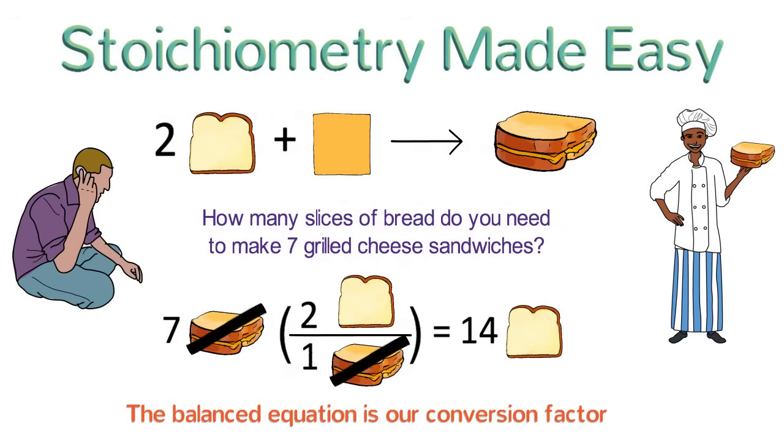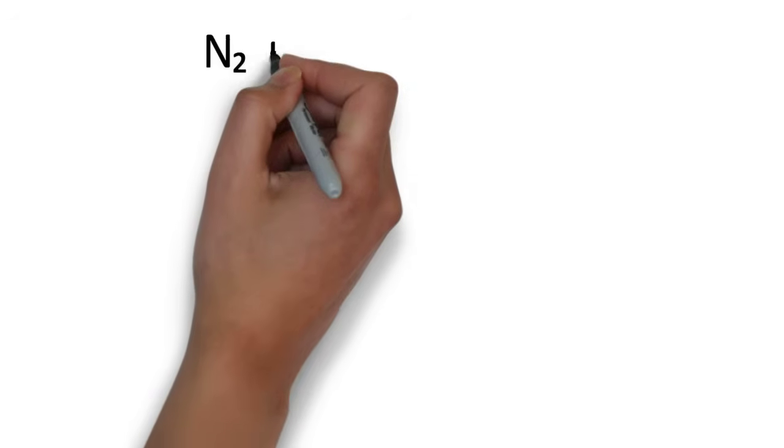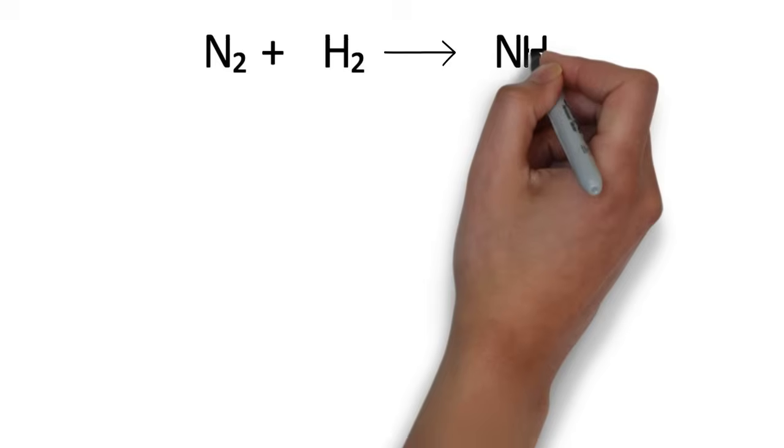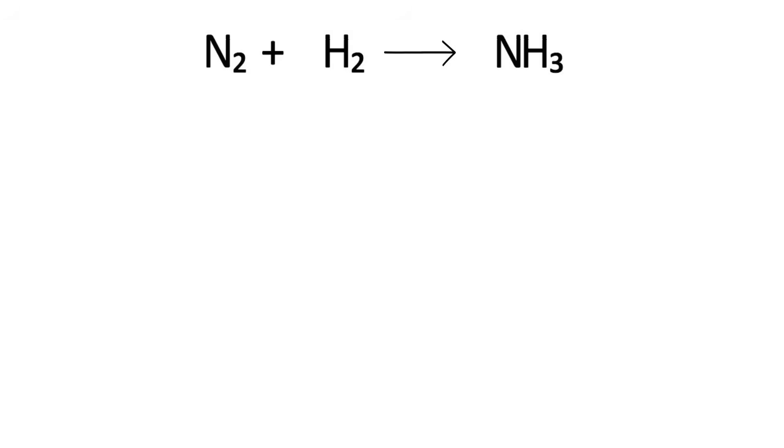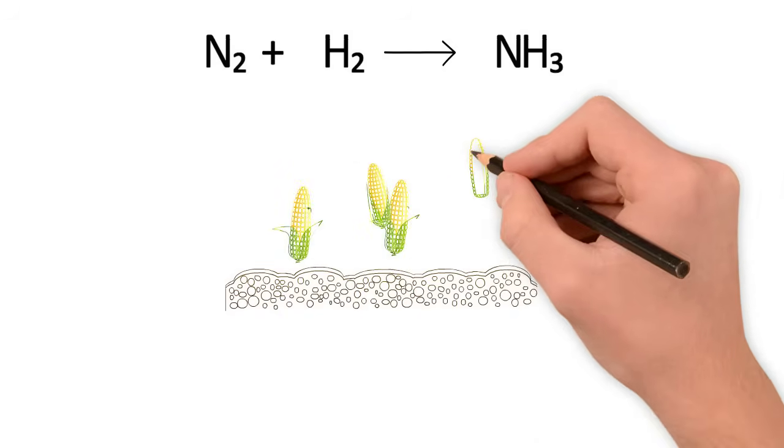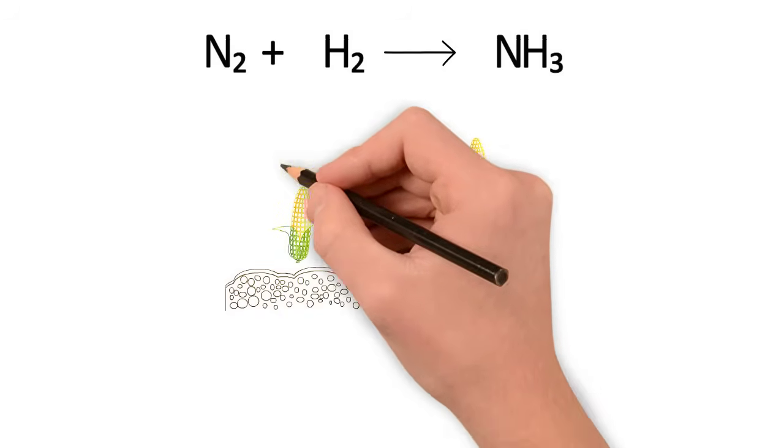Okay, now we're going to do the exact same thing with chemicals that we just did with food. Check out this reaction. Nitrogen reacts with hydrogen to produce NH3, which is called ammonia. This reaction is known as the Haber process, which is primarily used to make fertilizer.